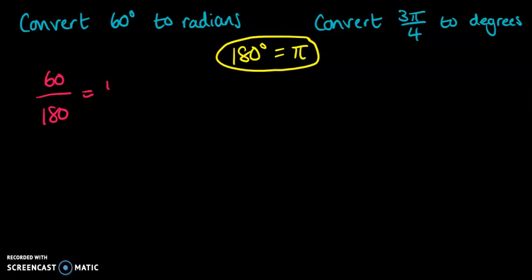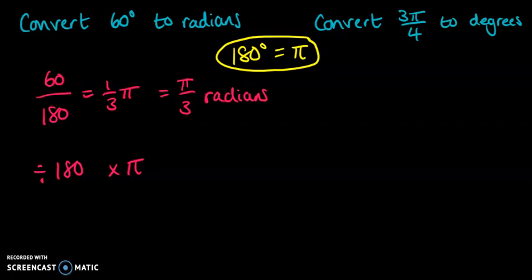...is equal to a third. So this will be a third π, or usually we'd write that as π/3 radians. So we divide by 180 and multiply by π. We're working out what proportion of 180 we have and then converting that into a measure of π.